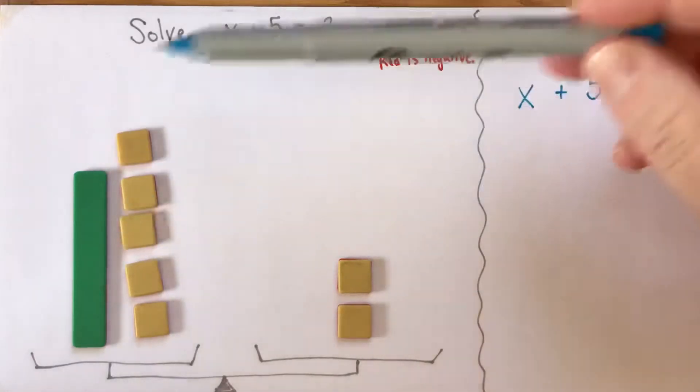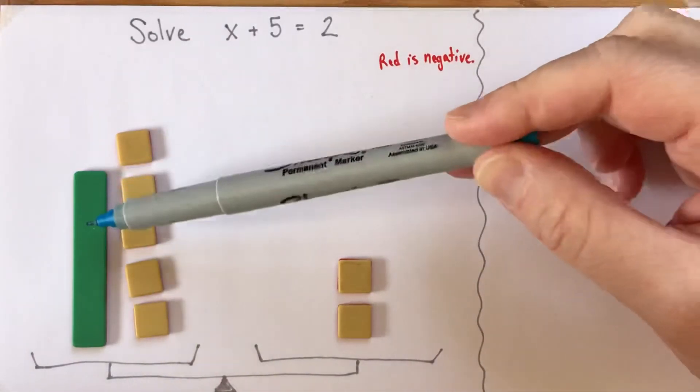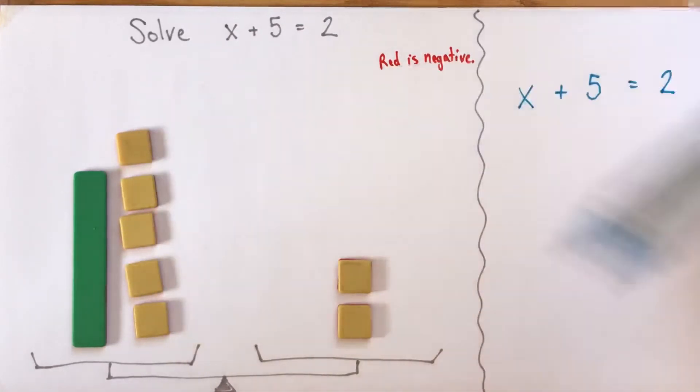Now oftentimes if we had an equation where we had x plus 5 was equal to something, all we'd want to do to isolate x would be to subtract 5. And you can do that, and if you're comfortable doing that here with the tiles and with the written algebra, you should go right ahead.